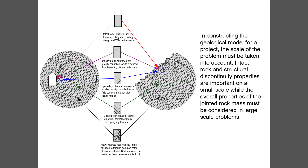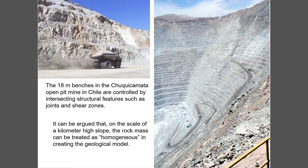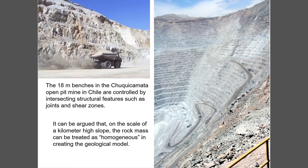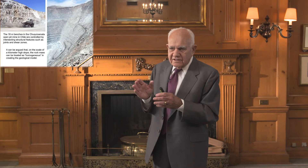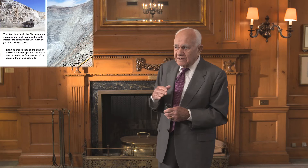For example, in the Chuquicamata open pit mine in Chile, the pit is currently one kilometer deep. Looking at the upper left photograph, the benches — each 18 meters high — are clearly defined by structural features; wedges and blocks fall out simply because they are defined by intersecting structural features. On the other hand, in the thousand-meter-high slope, it almost looks like a sandy soil with small particles. We still incorporate major features such as faults and shear zones as discrete elements, but we're justified in treating the whole rock mass as a homogeneous material.